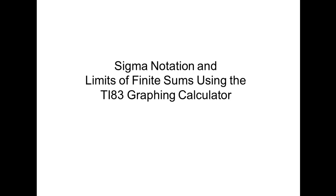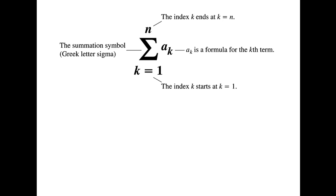Sigma notation and limits of finite sums using the TI-83 graphing calculator. Sigma notation enables us to write a sum with many terms in a compact form. The Greek letter sigma — in this case capital sigma — corresponds to our letter S and stands for sum. The index of summation, in this particular example K, tells us where the summation begins and ends. Any letter can be used to denote the index.